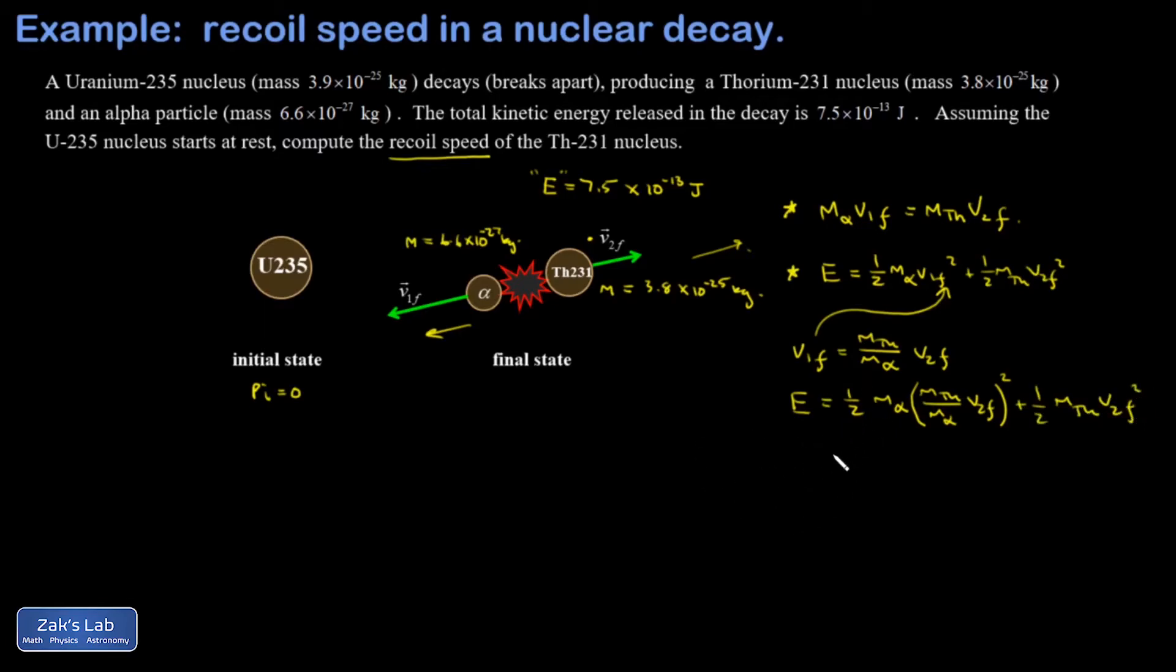There's a couple things that I can factor out here. I'm going to go ahead and move over to the left where there's a little more room. I'm going to factor out a V2 final squared. That leaves me with, from the first term, the one-half out and the V2 final squared out. In this term, I had an M thorium squared over M alpha squared, but one of those M alphas cancels, so I end up with M thorium squared over M alpha. In the second term, I have an M thorium.